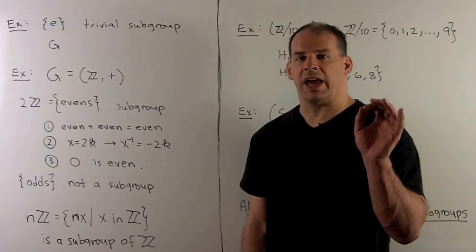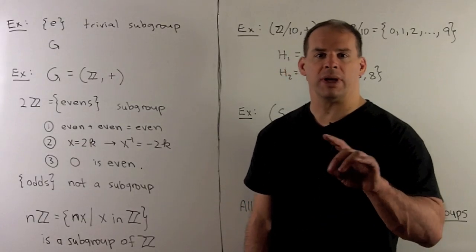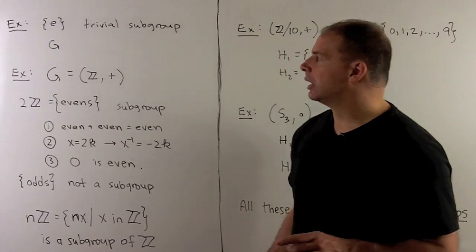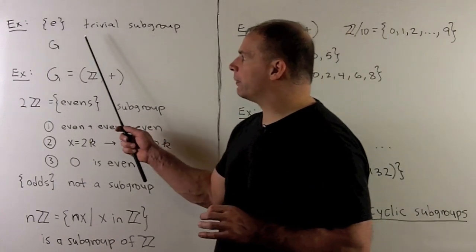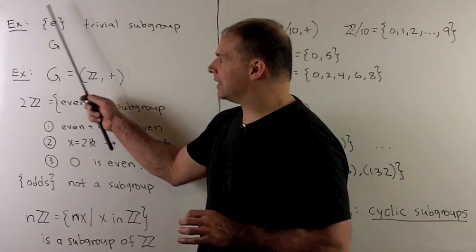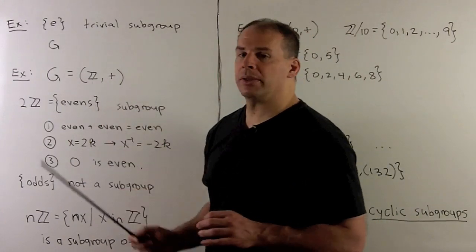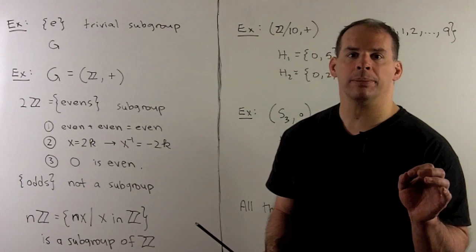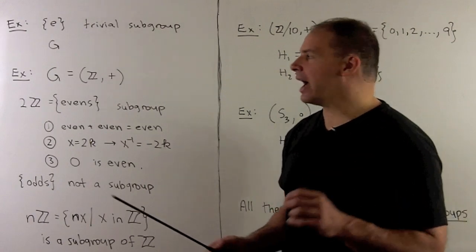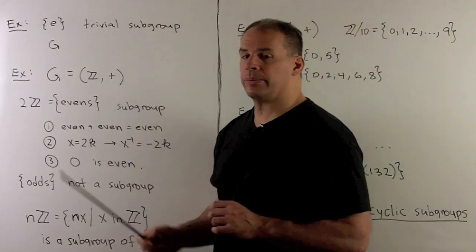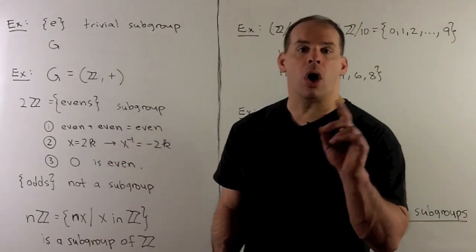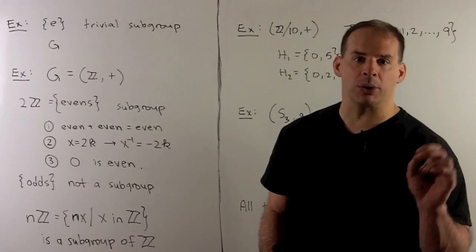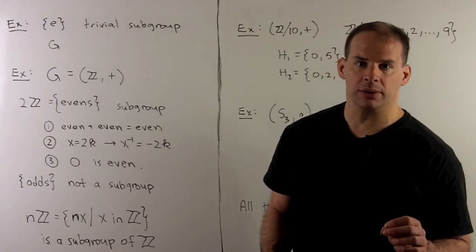Given any group, we have at least two subgroups: the subgroup formed by just the identity element, called the trivial subgroup, and the group G itself. All other subgroups we call proper subgroups.